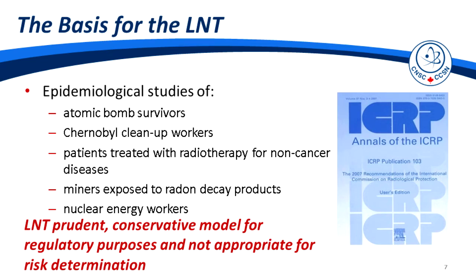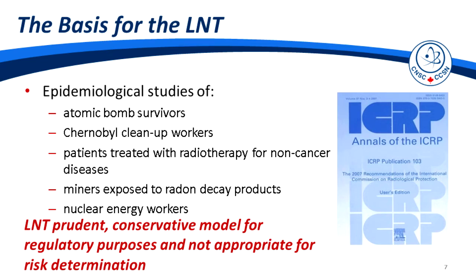Line E shows the hormesis model, which suggests that exposures to low doses induce a protective or beneficial effect. The basis for the LNT model comes from epidemiology studies including atomic bomb survivor studies, Chernobyl cleanup worker studies, patients treated with radiotherapy for non-cancer diseases, studies of miners exposed to radon decay products, and nuclear energy workers. The LNT model is a prudent, conservative model for regulatory purposes; it is not appropriate for risk determination.